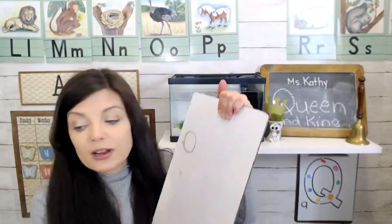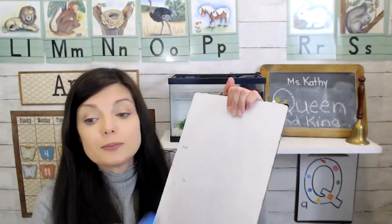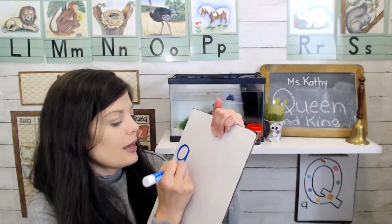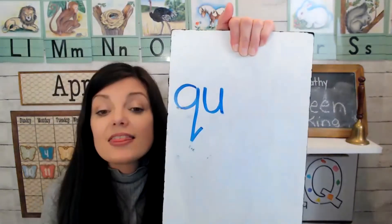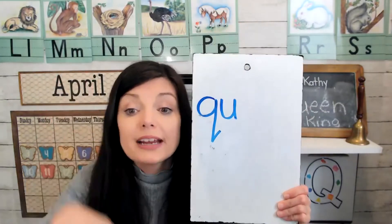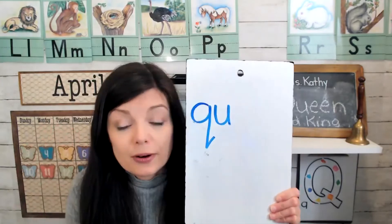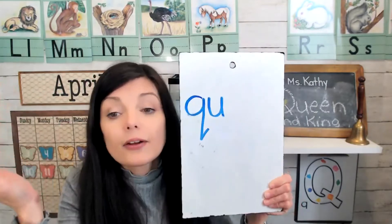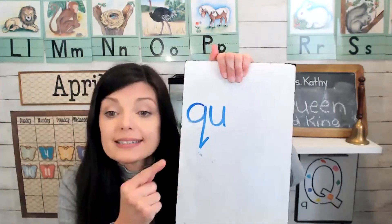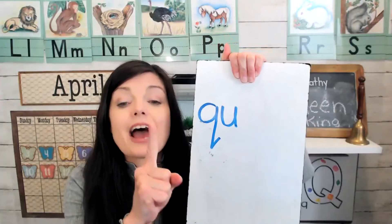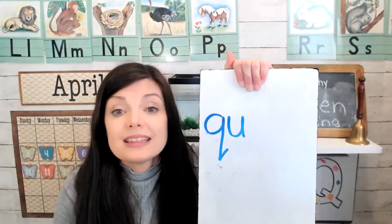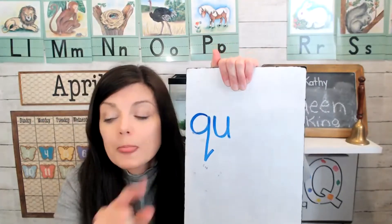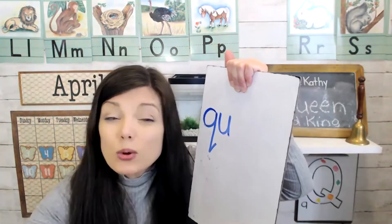Letter Q has a best friend too — letter Q's best friend is U, the letter U. So let's put Q and U together; they are besties. They go to the playground together, the library together, church together, McDonald's together. Q and U are almost always together, and Q and U makes the 'qu' sound, as in quiet.